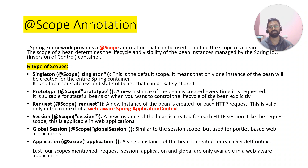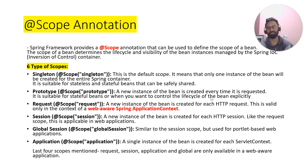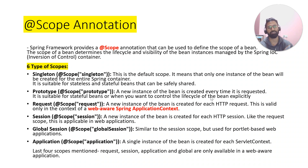Singleton scope is suitable for stateless beans that can be safely shared. It means a single instance will be created by the Spring IoC container, and whenever you ask for another instance of that particular bean, every time that single instance will be shared by the Spring IoC container.